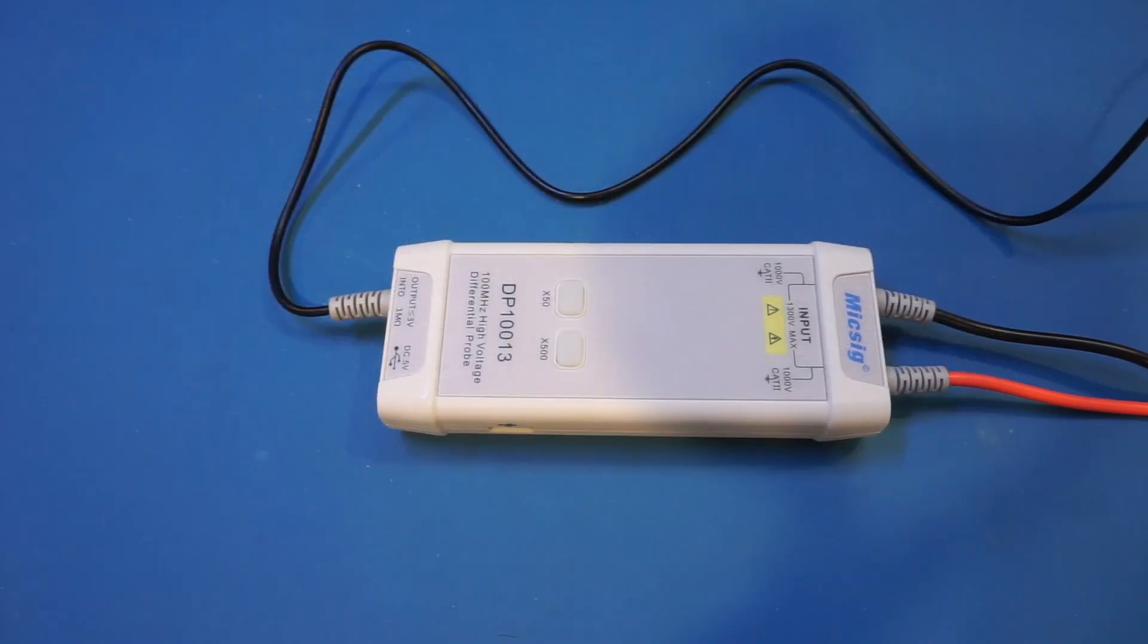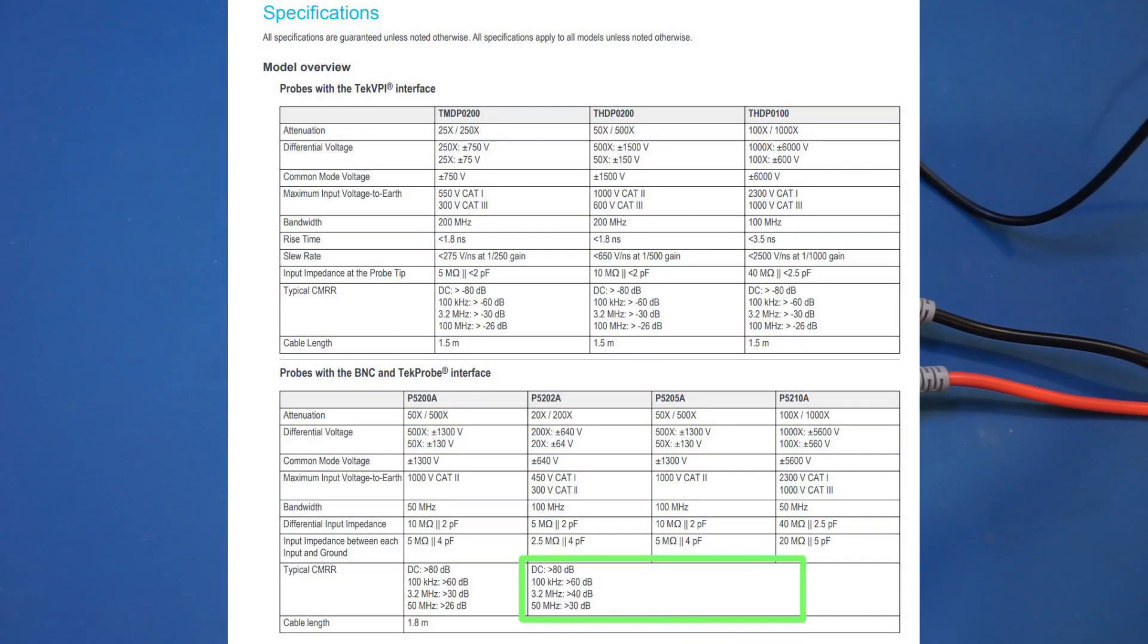But if you take a look at the Tektronix P5205A, you will see that the CMRR reduces significantly at the higher end of the bandwidth for the Tektronix probe, at just around 30 dB.